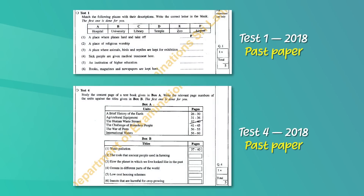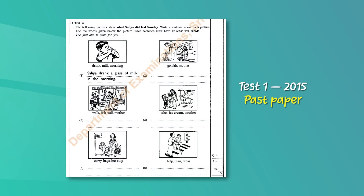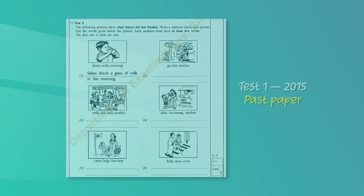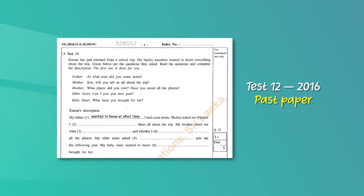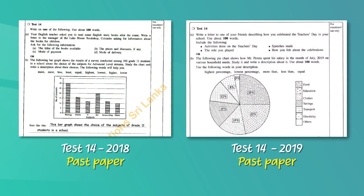In your exam paper you will get different types of tasks related to descriptive writing. You may get to match pictures of places with descriptions, or information with content for five marks, write sentences based on pictures for five marks, fill in the blanks for five marks, or read a text and fill in the blanks for seven marks.